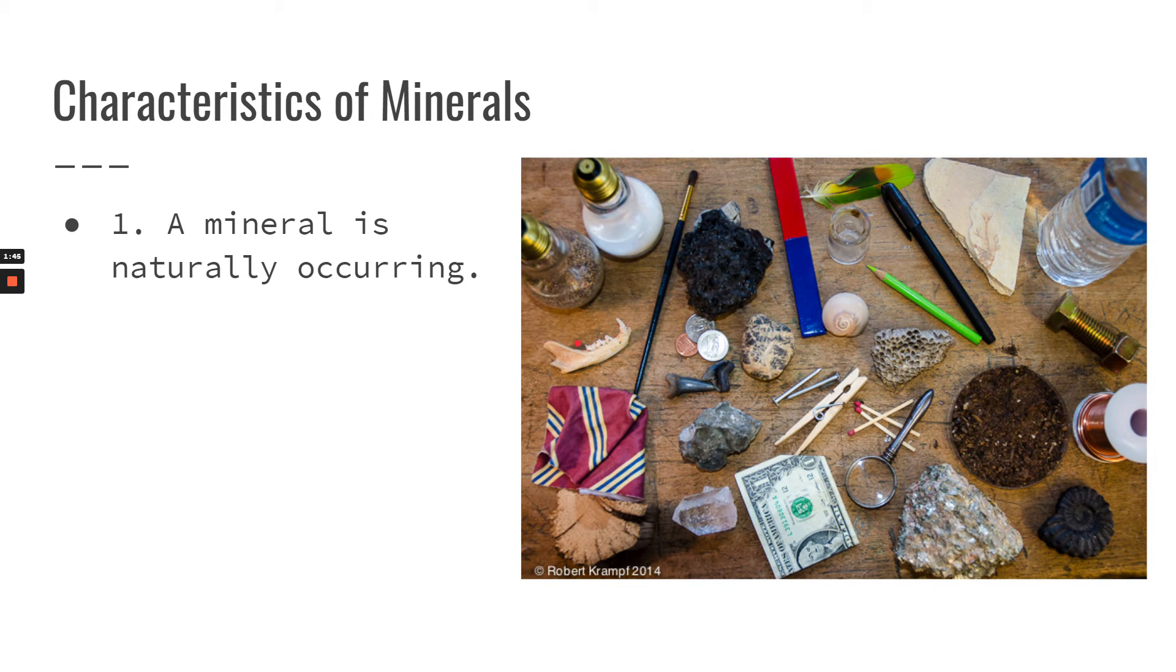Things that are not naturally occurring would be man-made things, like this magnet, pen, matches. Now some of these things have objects in them that are also naturally occurring. So for example, maybe a paintbrush. The brush part might have hair from an animal in it, but the paintbrush itself is not naturally occurring because it was created.